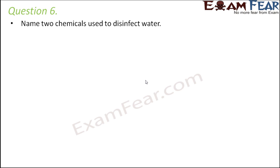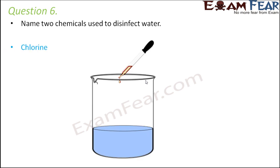Question number 6: Name two chemicals used to disinfect water. There are chemicals used for tertiary treatment of water. One example is chlorine — this process is called chlorination, where a few drops of chlorine are added to water. A small amount kills all harmful microorganisms. The other chemical is ozone, which can also help in disinfecting water.